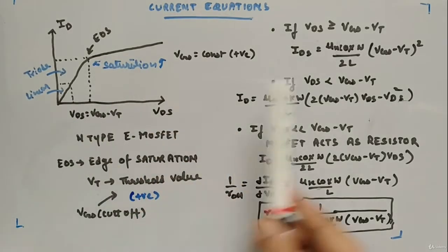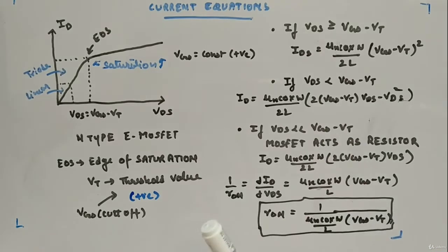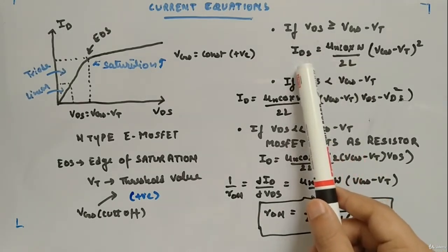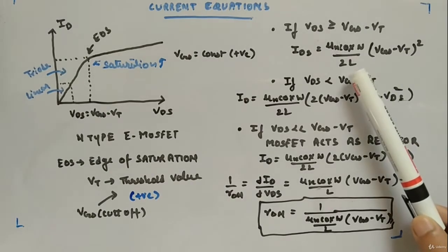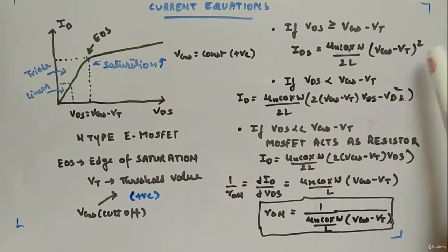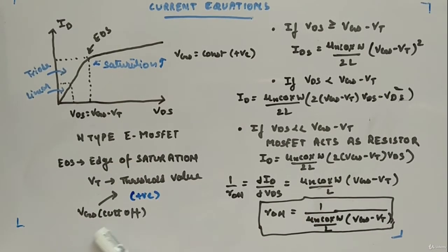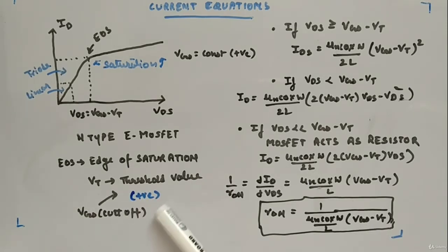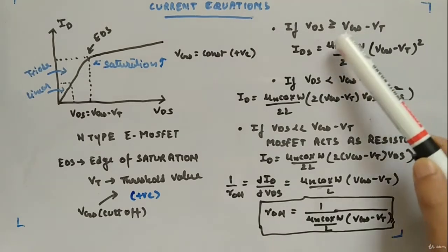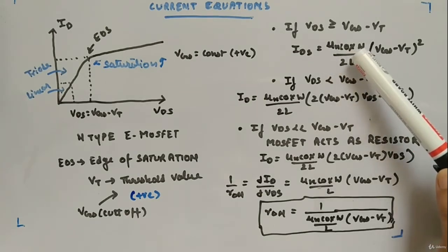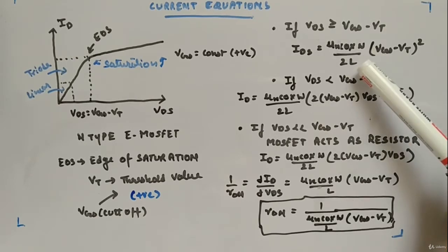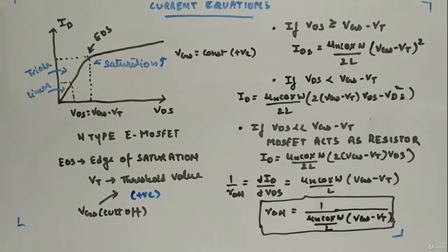In the saturation region, where Vds is greater than or equal to Vgs minus Vt, the drain-to-source current is: Id = μn·Cox·(W/2L)·(Vgs − Vt)². Here, Vt is the threshold voltage (positive for n-type enhancement MOSFET), μn is carrier mobility, Cox is oxide capacitance, W is channel width, and L is channel length — all constants provided in problems.